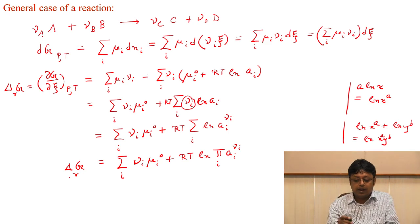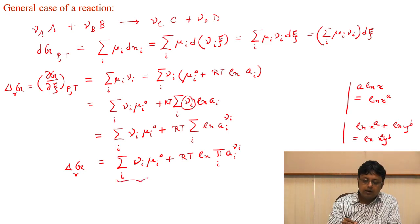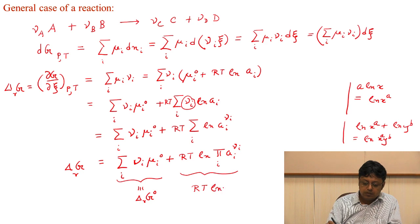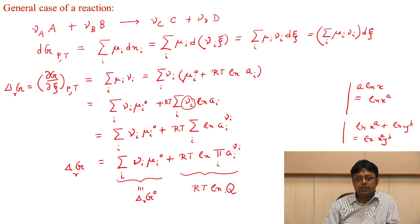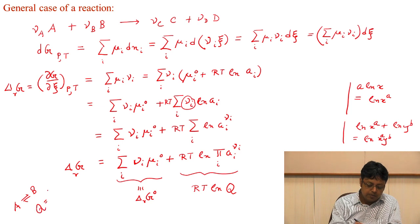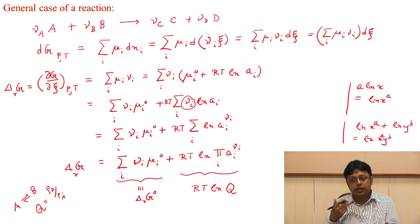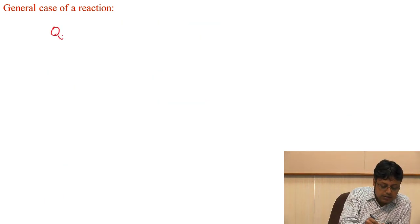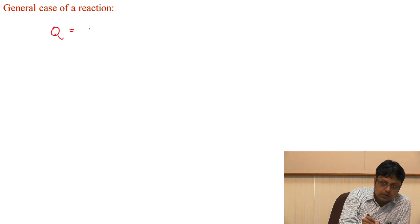Now, remembering that the reaction Gibbs free energy has a first term equal to ΔᵣG⁰, we can equate: ΔᵣG = ΔᵣG⁰ + RT ln Q. So you can see the expression for Q. For a specific equation like A → B, we wrote Q as the partial pressure of B divided by partial pressure of A. But now we are writing it in the more general sense, where Q is the product of aᵢ^νᵢ over all species.